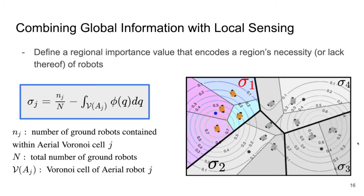In order to generally distribute robots to regions of interest, we assign a regional importance value or weight to each aerial Voronoi cell that we call sigma. This sigma is the difference between the proportion of robots within an aerial cell, and the proportion of robots that should be in an aerial cell. Using the farm example, if there is a region with a lot of ripe crop, ideally we would want a lot of robots there. This ideal proportion of ground robots is found by using the aerial robots to coarsely integrate the importance function in their respective Voronoi cells. Again, the aerial robots are able to do this because they have broad but coarse sensing ability.